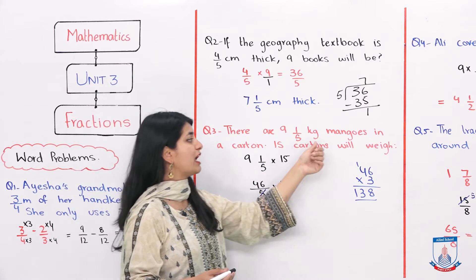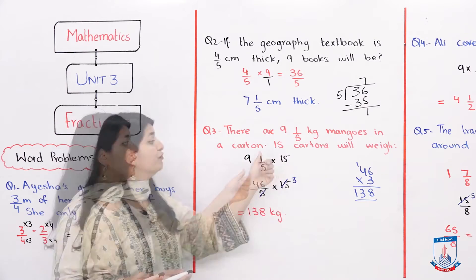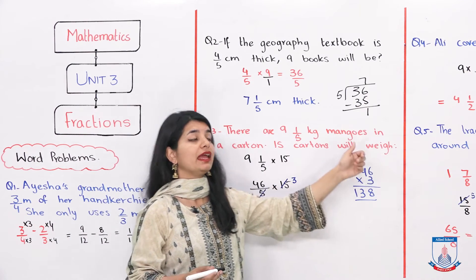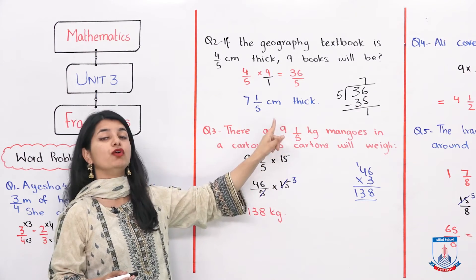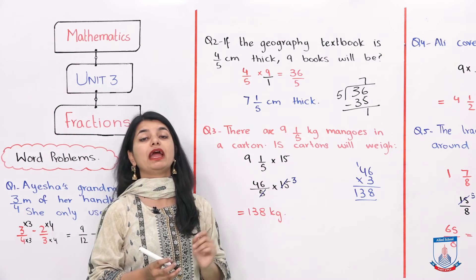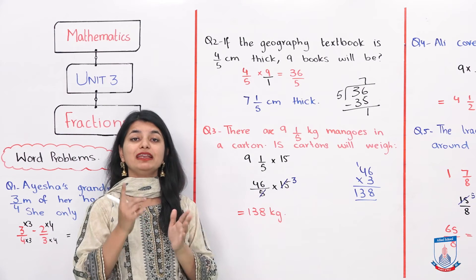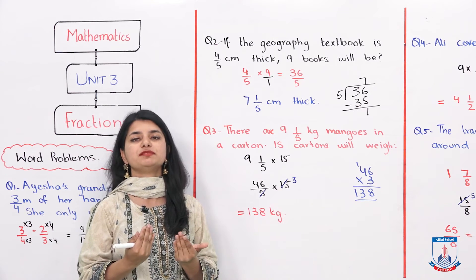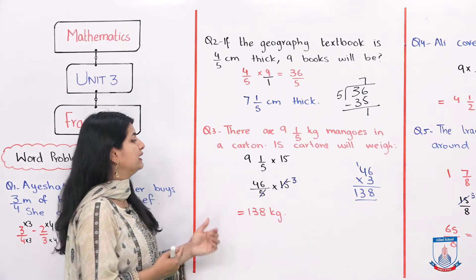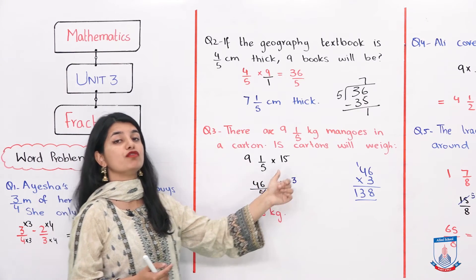Question number 3. There are 9 whole 1 by 5 kg mangoes in a carton. 15 cartons will weigh? 1 carton has 9 whole 1 by 5 kilograms of mangoes. The weight of 1 carton is this, so 15 cartons will be? Simply you have to multiply 9 whole 1 by 5 by 15.